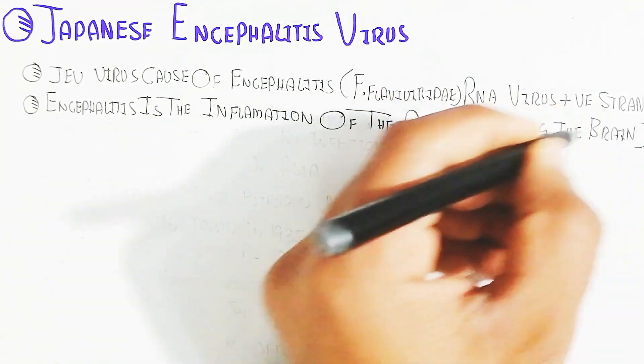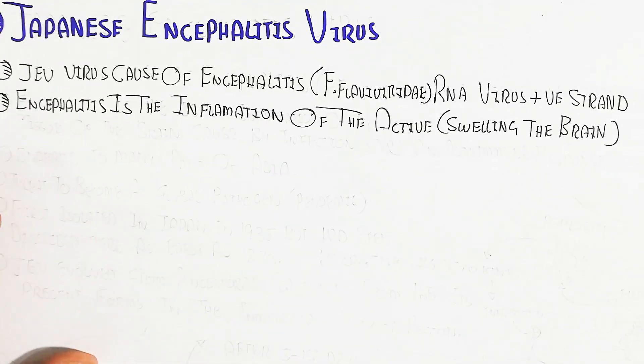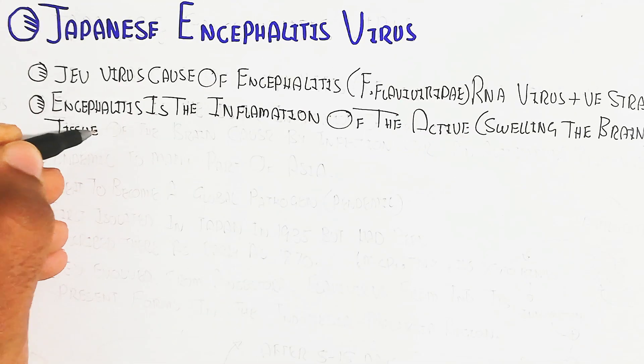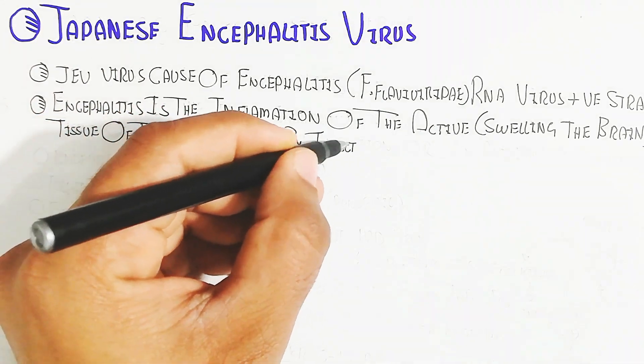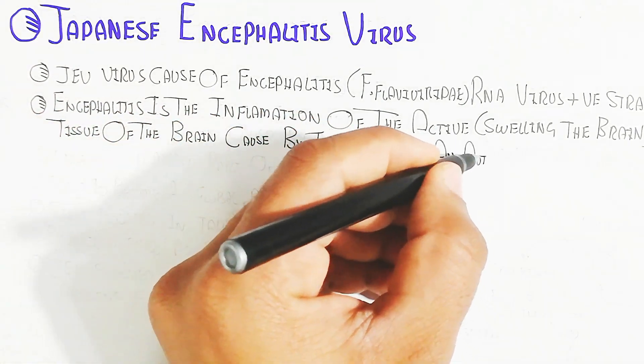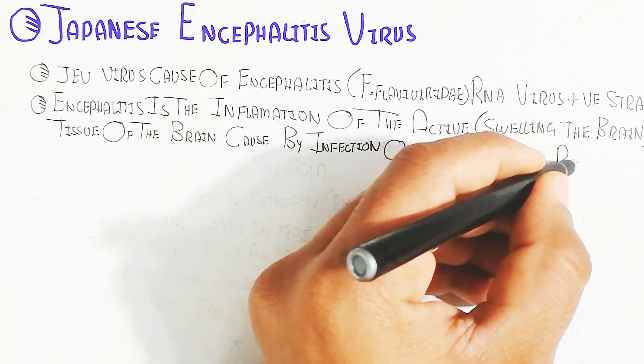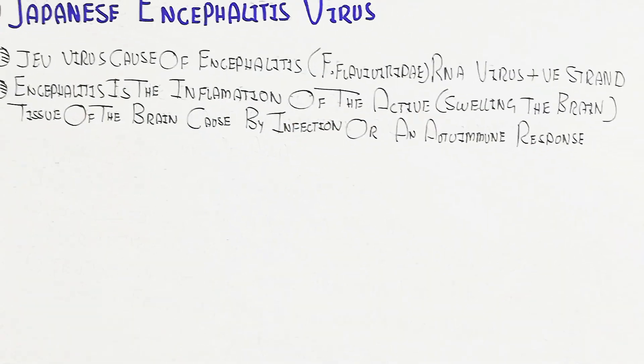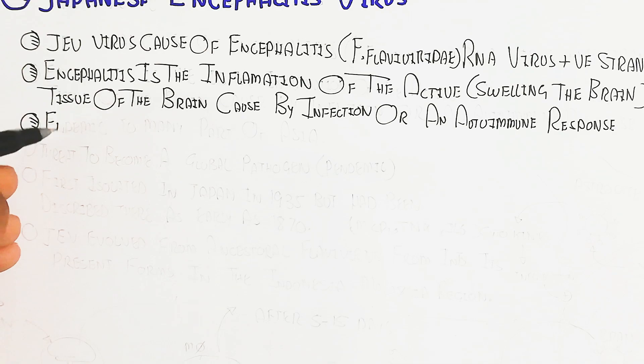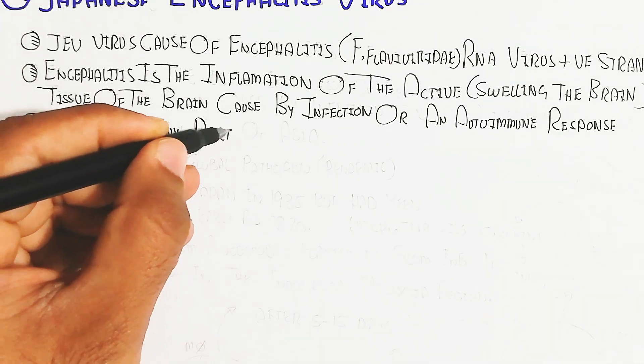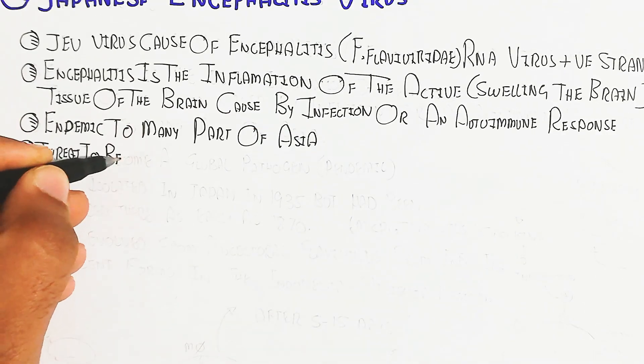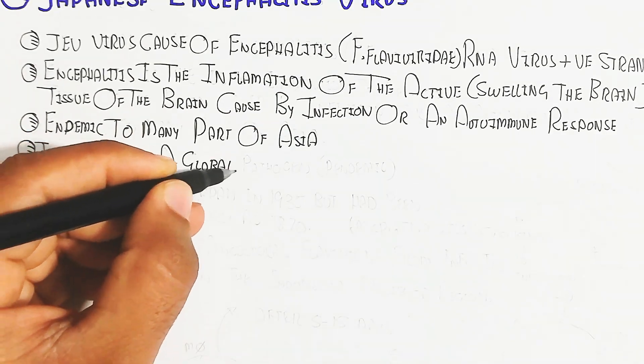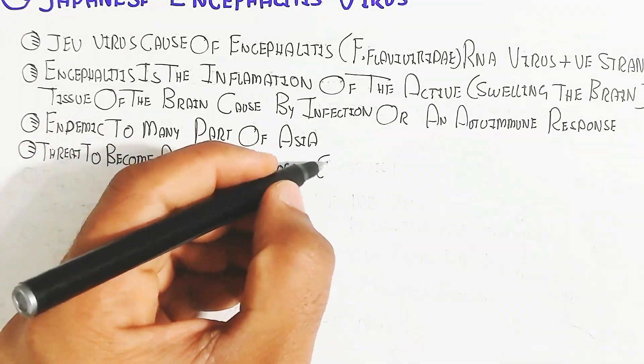Encephalitis is the inflammation or acute swelling of brain tissue caused by infection or an autoimmune response. Autoimmune response can cause inflammation, but in this video we are understanding about JEV infection.